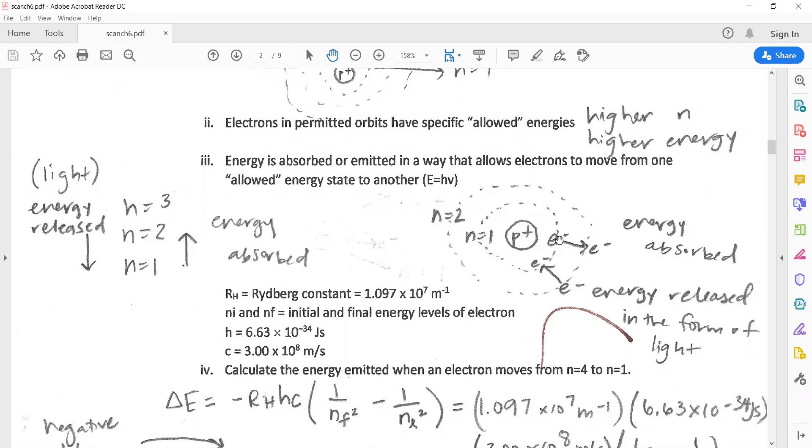Energy is being absorbed as electrons jump out and then energy is being released as electrons come back in. If an electron's moving up these levels, energy is being absorbed, and when the electron's moving back down, it will emit light.